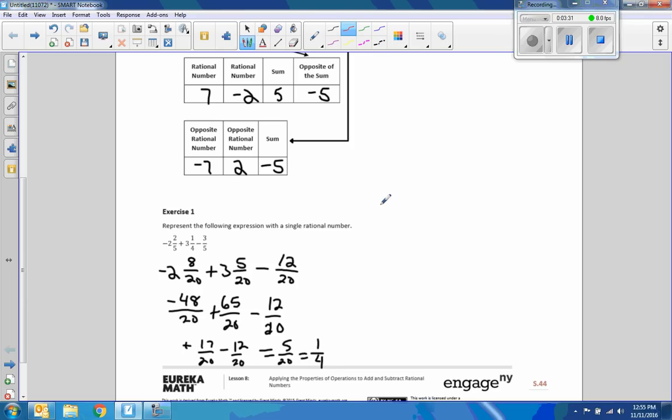The other way we can do this is use the commutative property and rearrange things. So negative 2 and 2 fifths plus 3 and a quarter plus negative 3 fifths. We're going to change it all to addition. Then I move this over and put the fifths together. So it will be negative 2 and 2 fifths plus negative 3 fifths plus 3 and a quarter. All I did was rearrange these two. We can do that in addition.